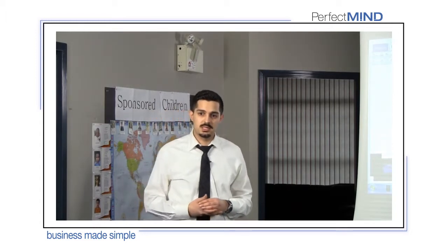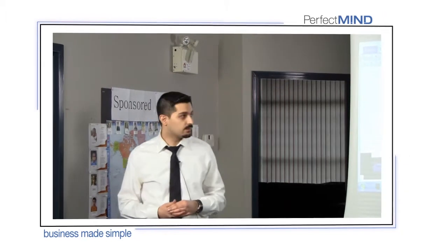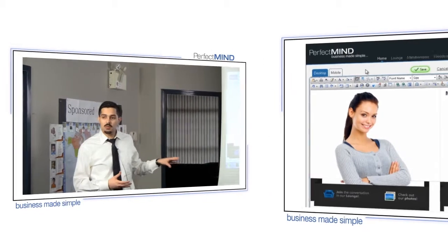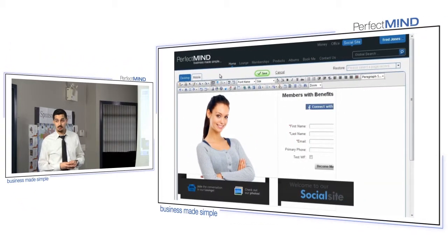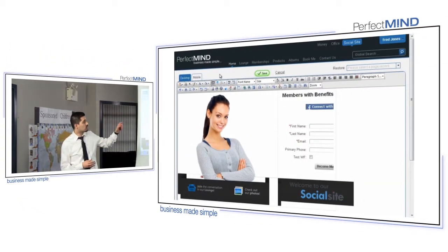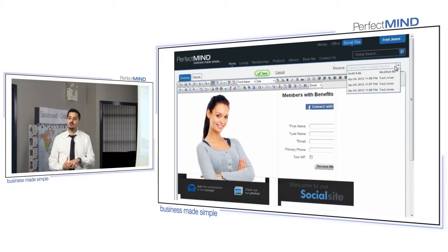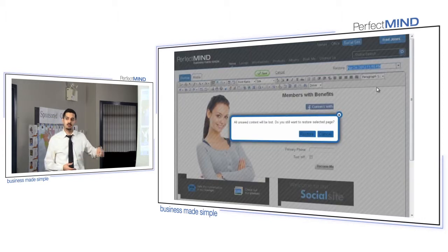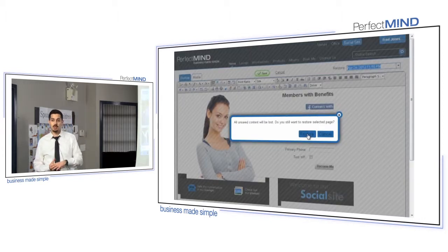So, what we have introduced is a new feature called Page History. Whenever you're editing a webpage or any page within the social site application, you will see a restore drop-down on the top right-hand side. The restore feature will store 10 versions of the page, previously saved versions, so you can always restore back to that previous version if any mistakes happen on the page while editing it.